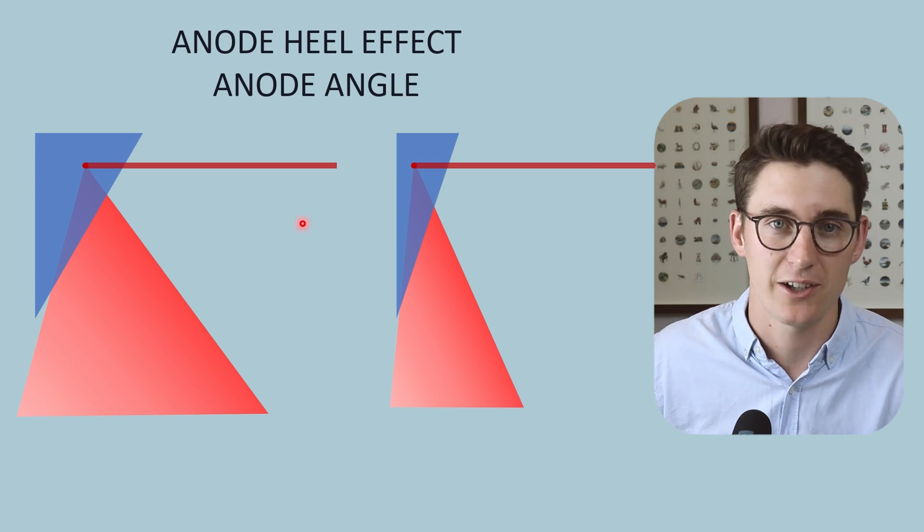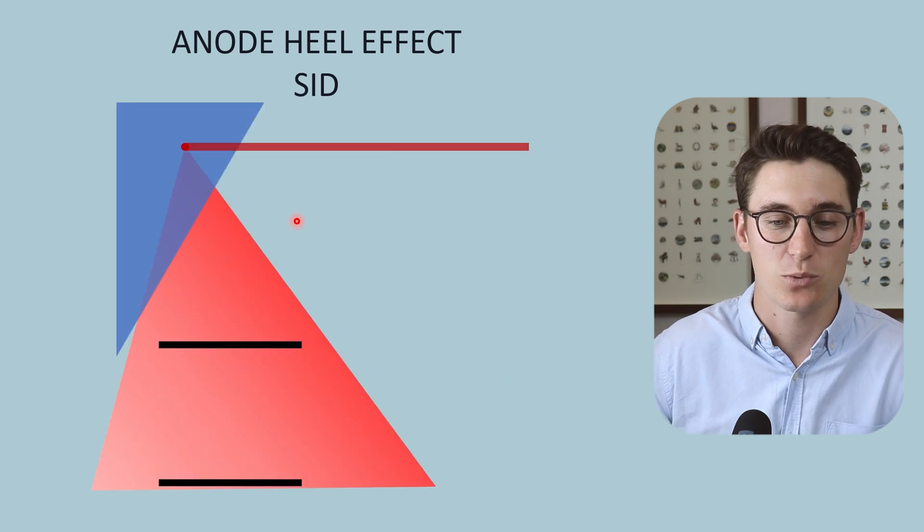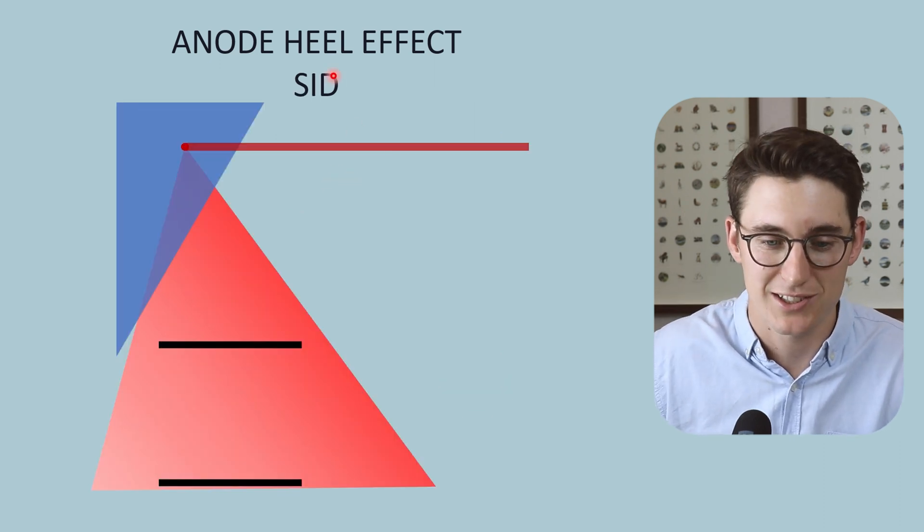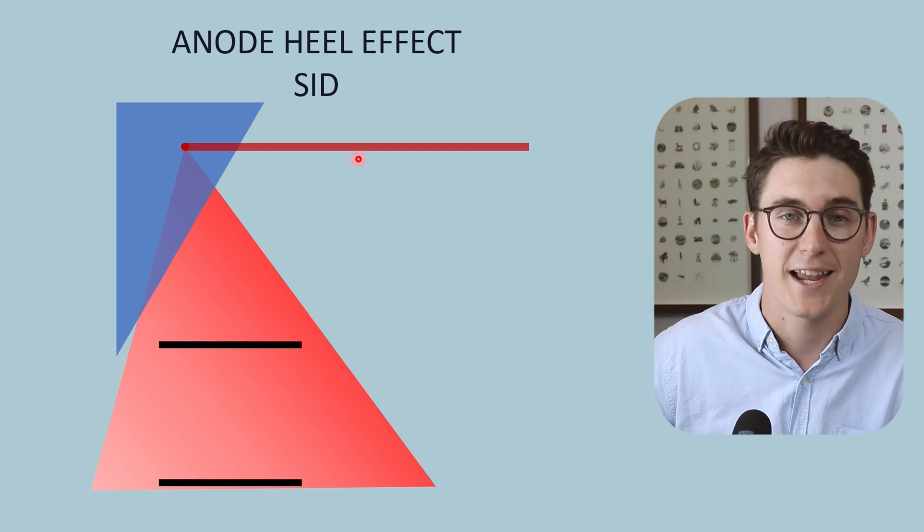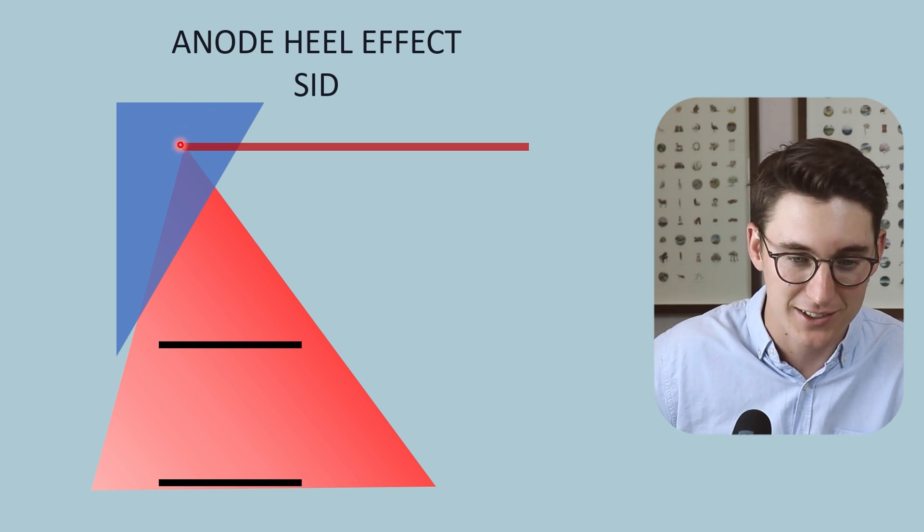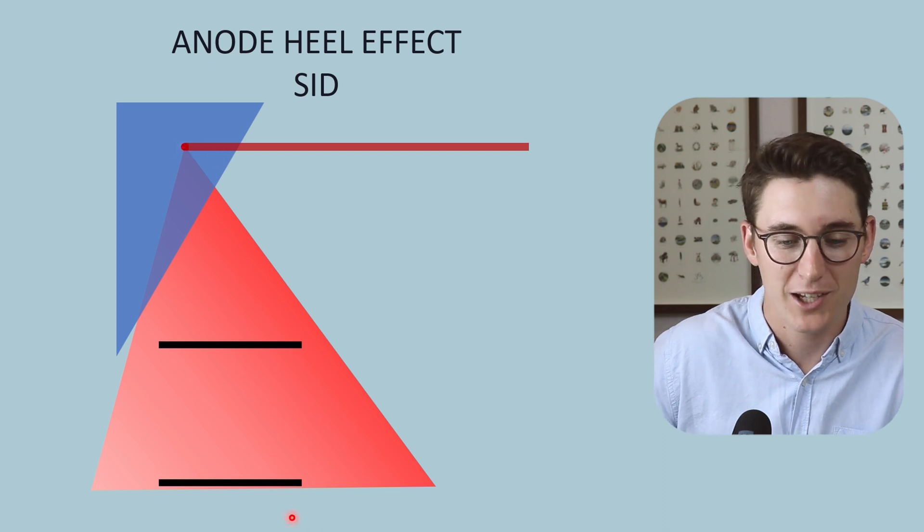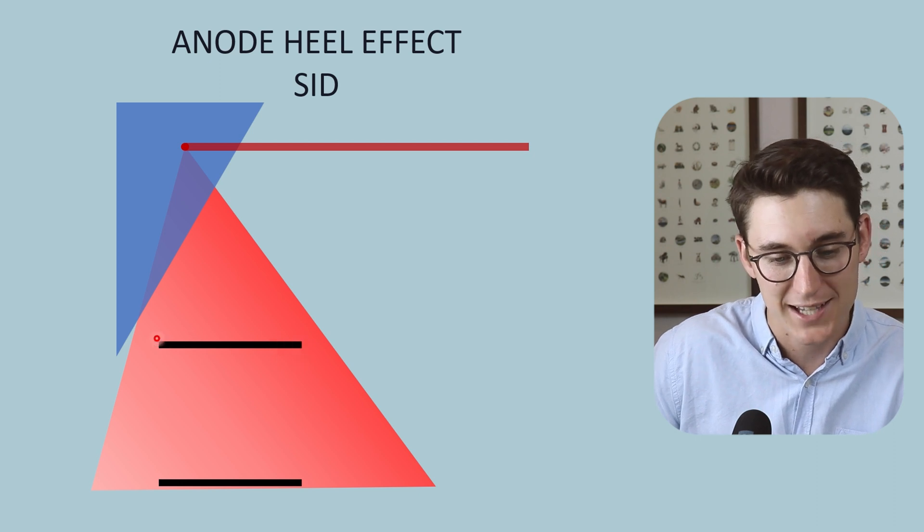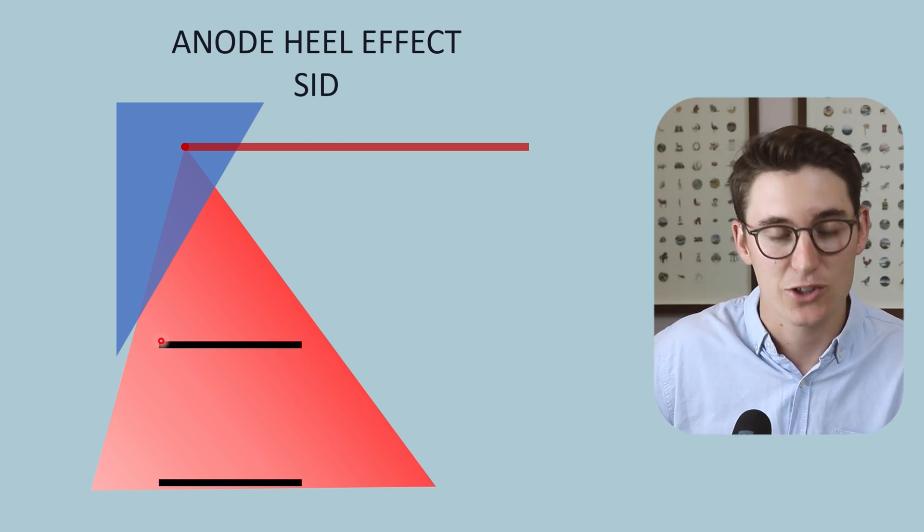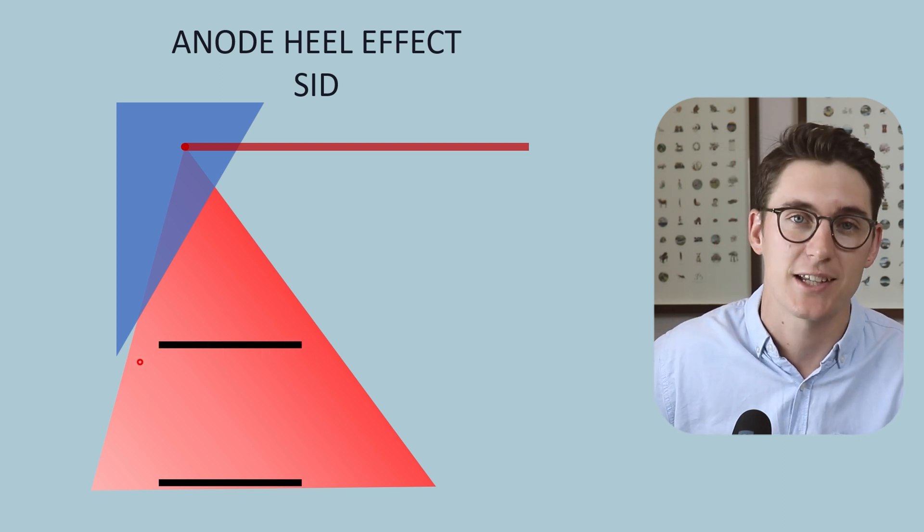The second thing that changes our anode heel effect is what's known as our source to image distance. Our source is where x-rays are produced, where electrons interact with our tungsten in our anode and produce x-rays. That is our source. Our image refers to where the image is created, our detector or our cassette that is detecting x-rays. They've passed through the patient and now they're hitting our x-ray detector.